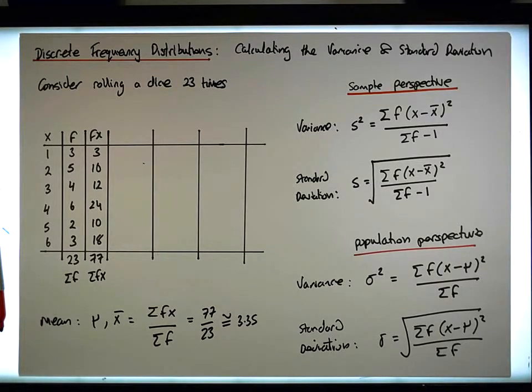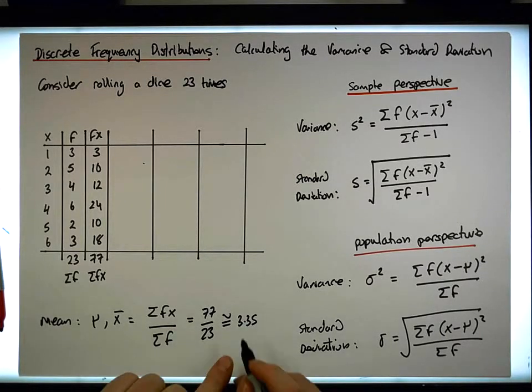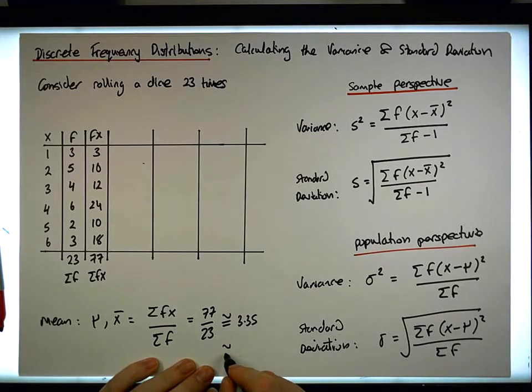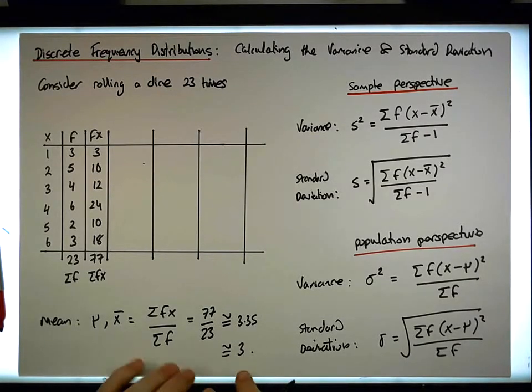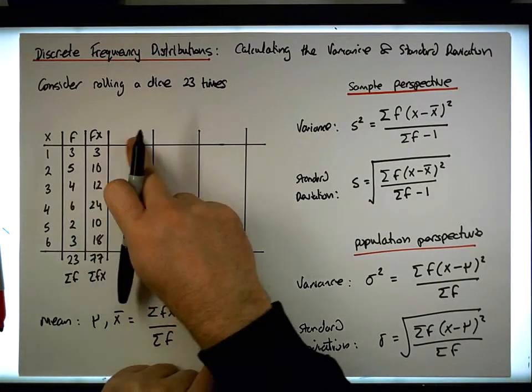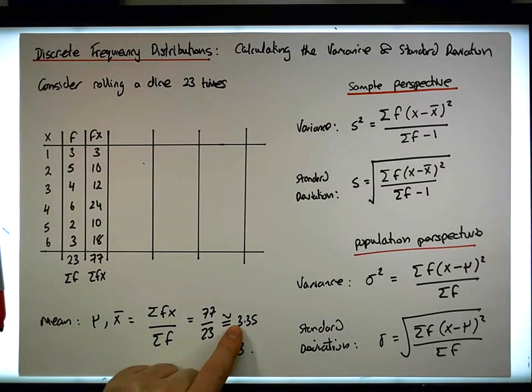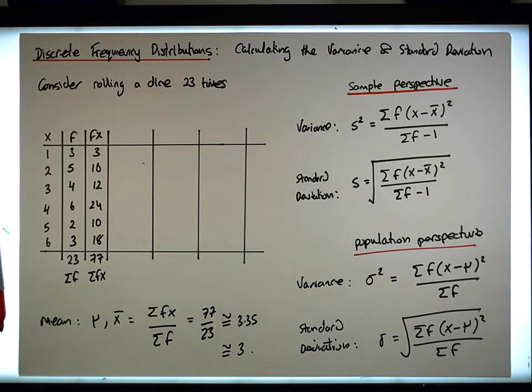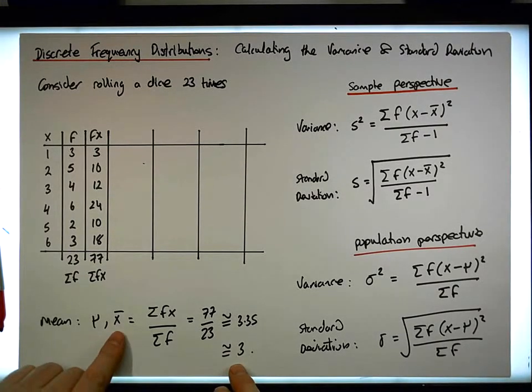I'm actually just going to make this a little bit easier. And what I'm going to do is I'm just actually going to round this to 3. So this is approximately equal to 3, just to keep this. If we carry the decimals around, it just gets a bit more messy. So now we know the mean value. The mean is 3.